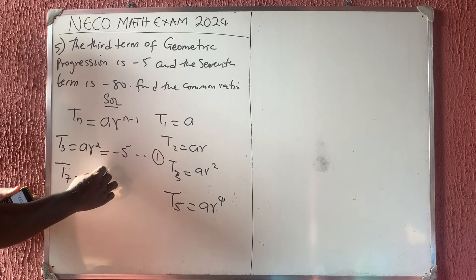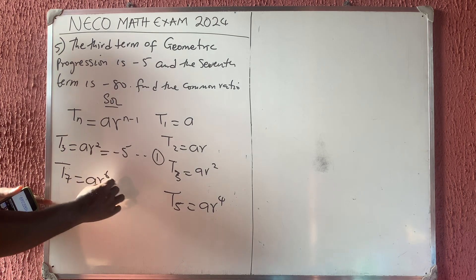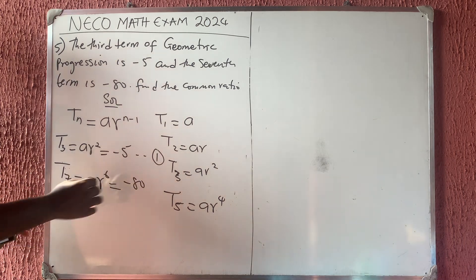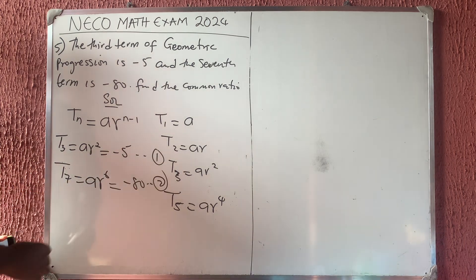It would be A R raised to the power of 6, and it should be equal to minus 80. Let's call it equation 2.